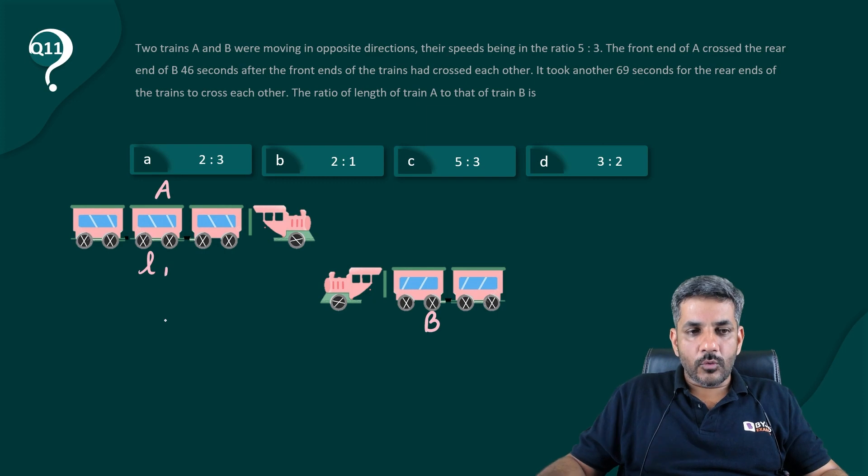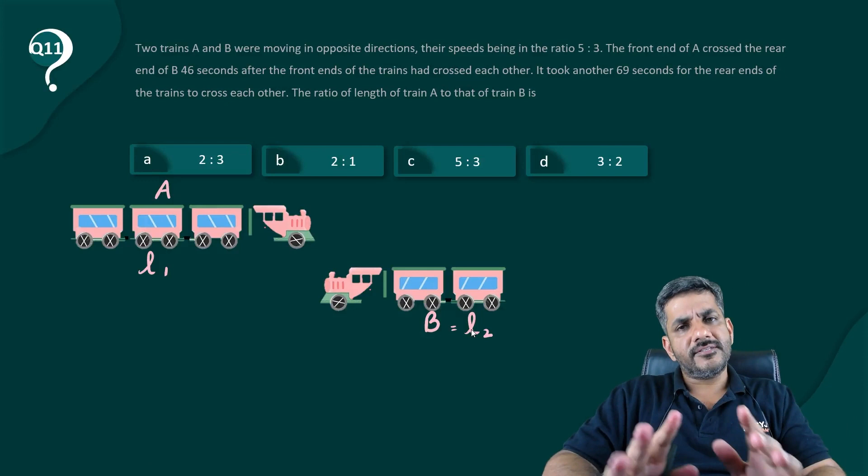Let's say the length of train A is L1, length of train B is L2. Question is asking us what is L1 is to L2.